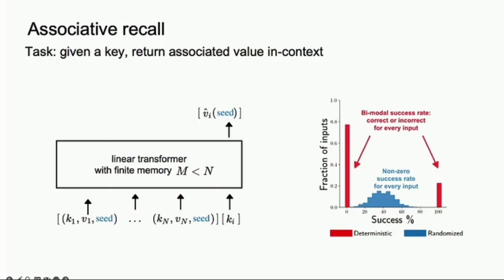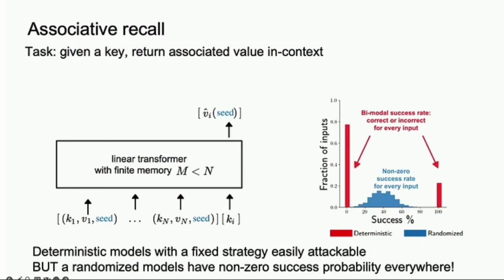To recontextualize, what would a deterministic strategy be? With limited memory, I probably gather as much information as I can, so I remember the first k associations and forget the rest. That's what a deterministic strategy looks like. With an adversary, it's very easy to attack - just take the one association you didn't learn and ask for that one.